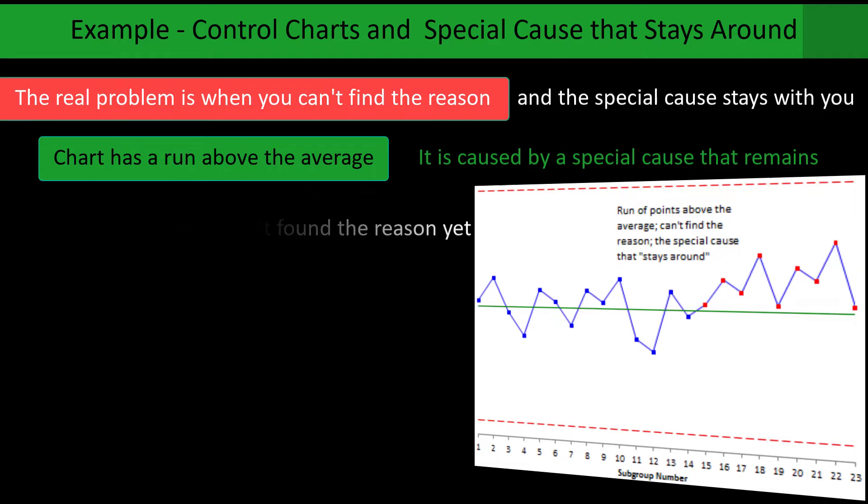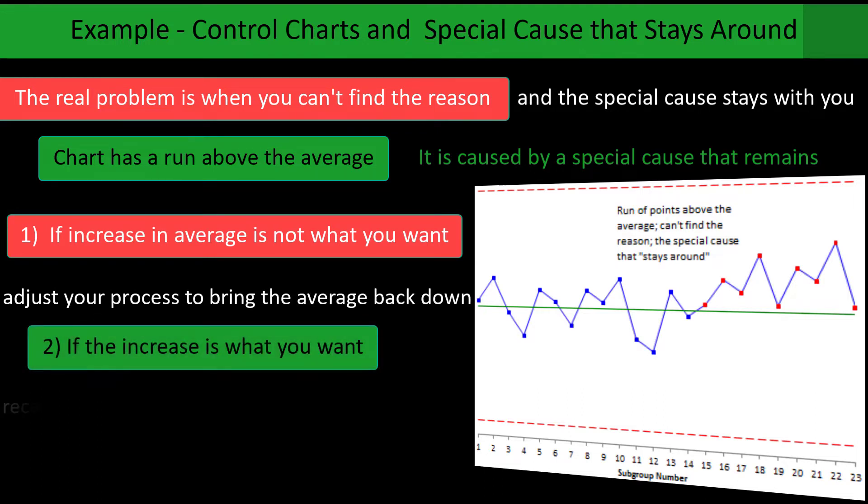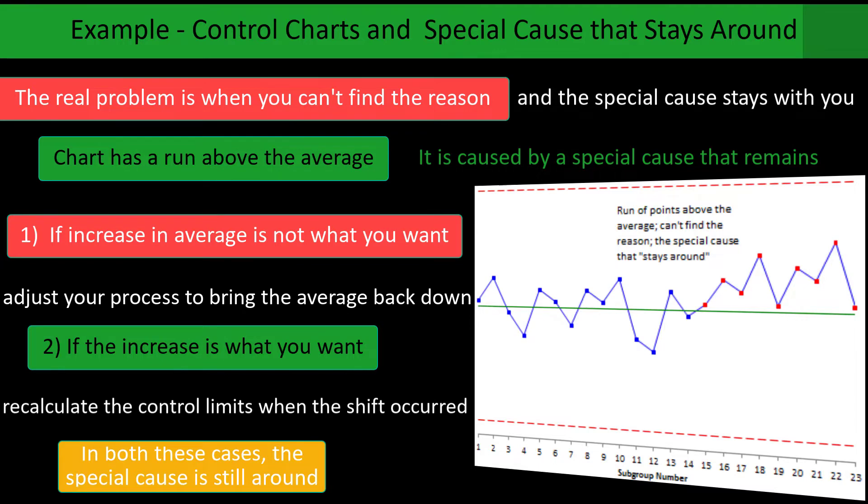Well, there are two things you can basically do in this situation. If the increase in average is not what you want, you can adjust your process to bring that average back down. If the increase in average is what you want, that's good, then you recalculate the control limits where they should start. In both cases, that special cause is still part of your process.